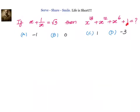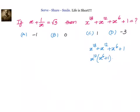Let us look at what is the expression we have to find out the value for and see if we can simplify that. My first step will be to write down what we need to find: x power 18 plus x power 12 plus x power 6 plus 1. Can I factorize this? I can take x power 12 common from the first two terms. I will have x power 12 into x power 6 plus 1, plus 1 into x power 6 plus 1. So the given expression can be written as x power 12 plus 1 into x power 6 plus 1.